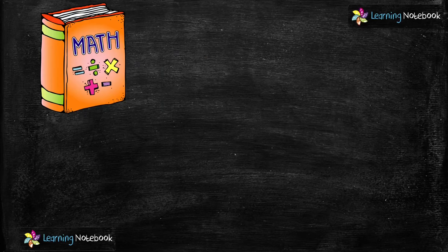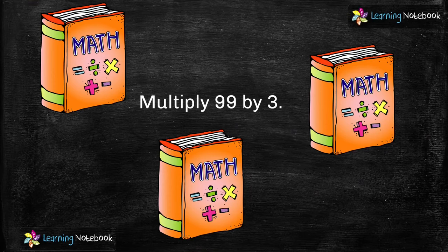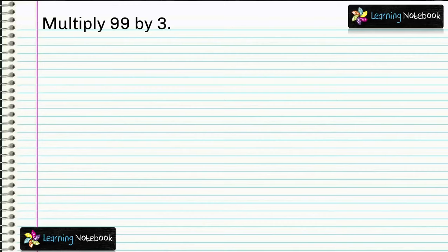Now let's do the last example. If one book has 99 pages, how many pages do three such books have? Yes, we need to multiply — we will multiply 99 by 3. If you are enjoying our videos, please like, share, comment, and subscribe to our channel Learning Notebook.